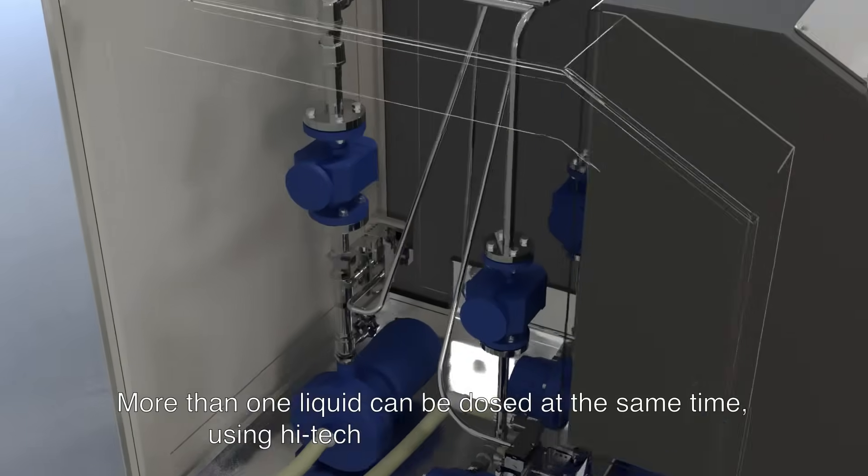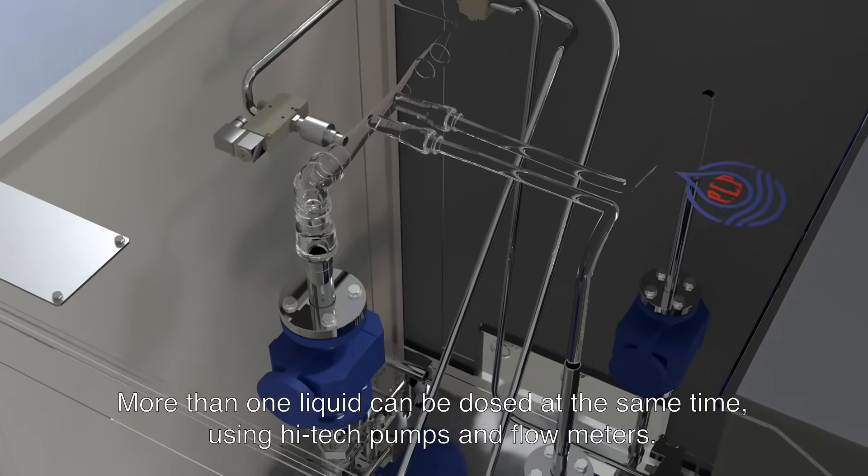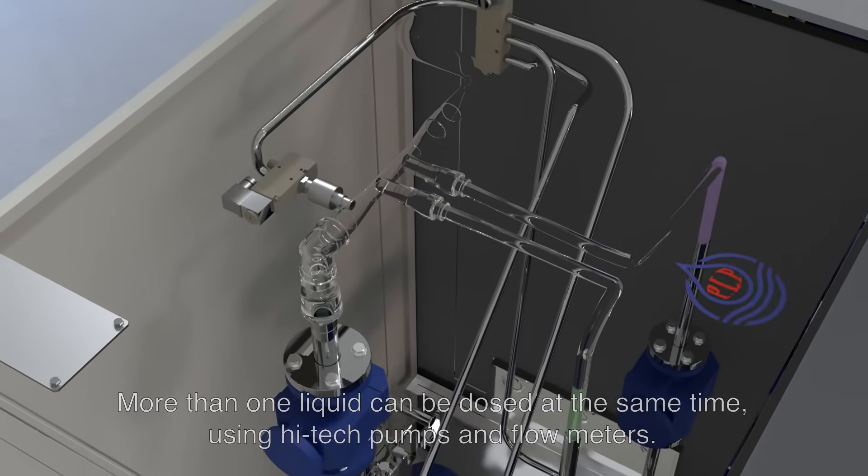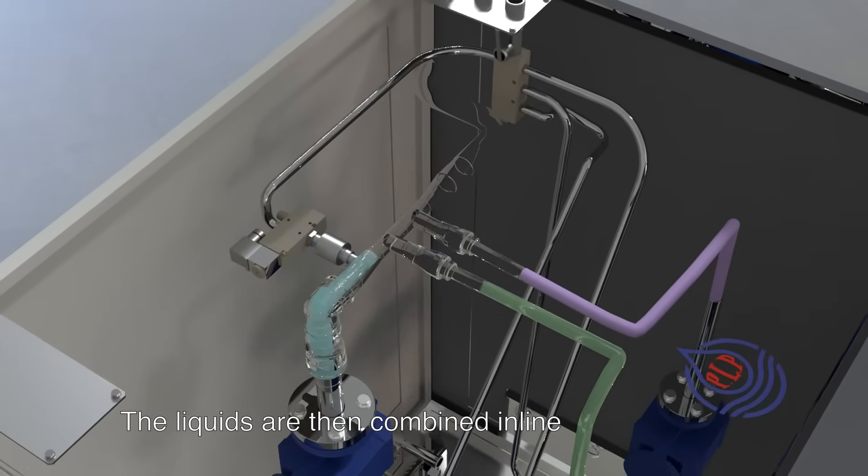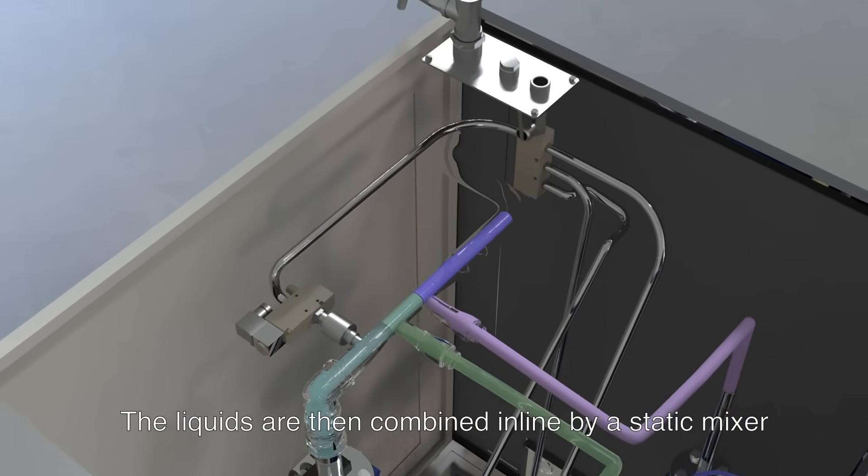More than one liquid can be dosed at the same time, using high-tech pumps and flow meters. The liquids are then combined in line by a static mixer.